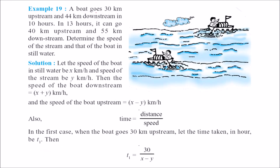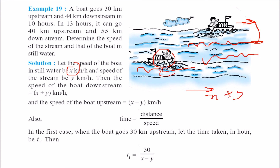Another example: a boat goes 30 km upstream and 44 km downstream. When going downstream, the river helps you — the effective speed is x plus y (boat speed plus stream speed). Going upstream, the river resists you — the effective speed is x minus y. Time equals distance divided by speed.